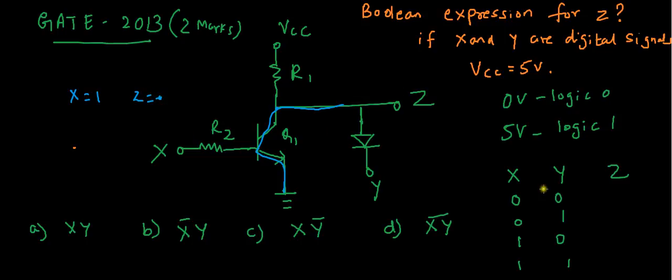So in this case, for X equal to 1, in these two cases, Z will be 0 irrespective of the input of Y.